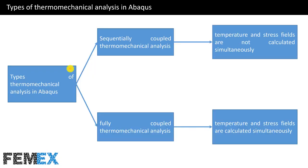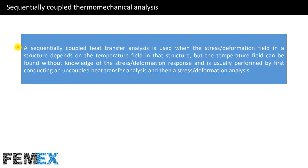There are two types of thermo-mechanical analysis in Abaqus: sequentially coupled thermo-mechanical analysis and fully coupled thermo-mechanical analysis. In sequentially coupled thermo-mechanical analysis, temperature and stress fields are not calculated simultaneously. But in fully coupled thermo-mechanical analysis, temperature and stress fields are calculated simultaneously. A sequentially coupled heat transfer analysis is used when the stress deformation field depends on the temperature field, but the temperature field can be found without knowledge of the stress deformation response. It is usually performed by first conducting an uncoupled heat transfer analysis and then a stress deformation analysis.